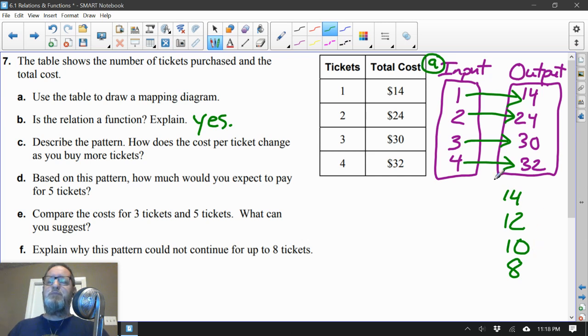Oh, I see what's happening. The price per ticket. How does the cost per ticket change as you buy more tickets? It's decreasing. See what's happening? 14, 12, 10, 8. It's decreasing by $2 per ticket.